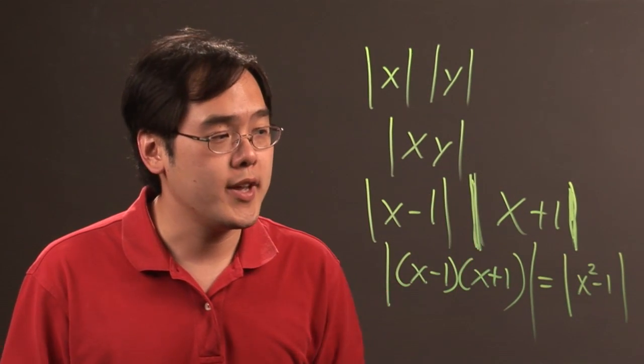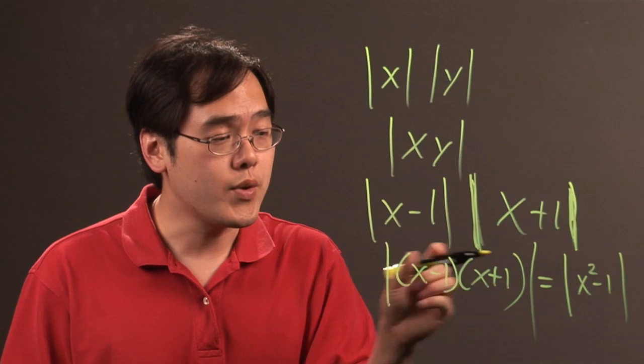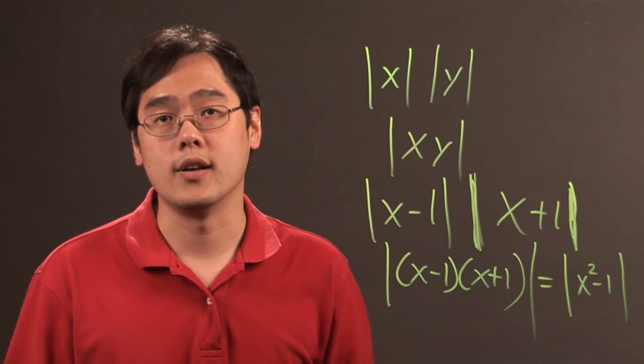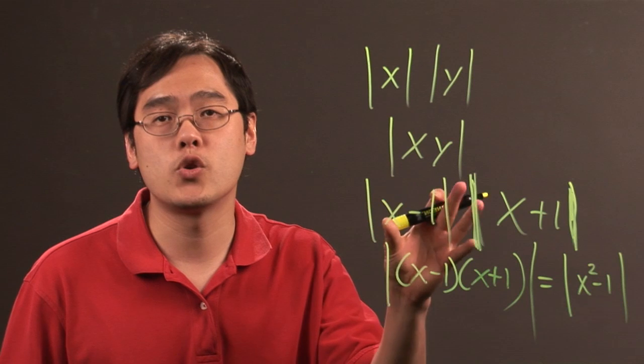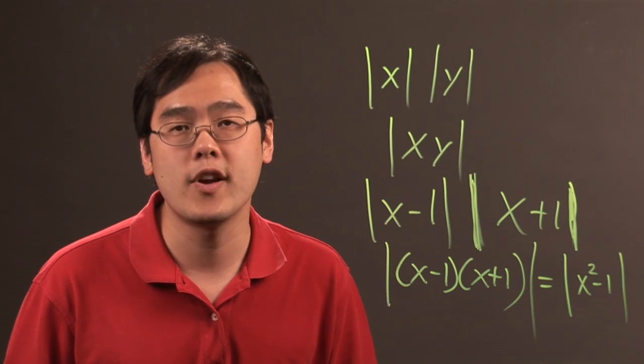So when you're multiplying absolute value variables, you can combine them just like this. It's just a matter of simplifying later on. I'm Jimmy Chang, and that's a brief tutorial on multiplying absolute value variables. Thank you.